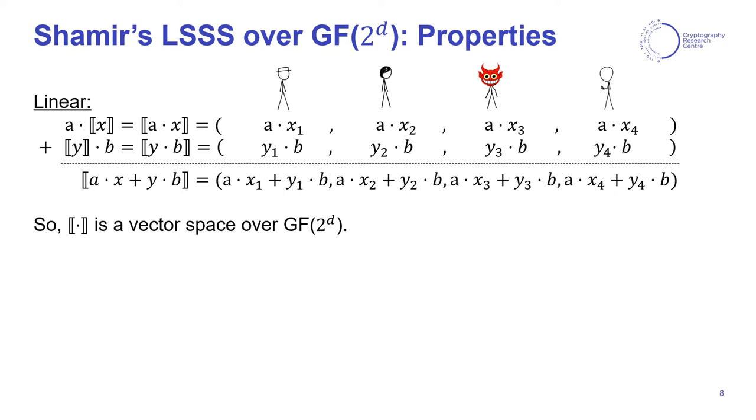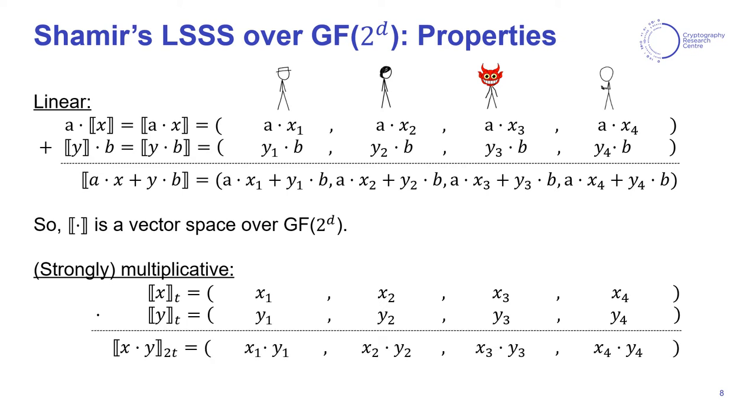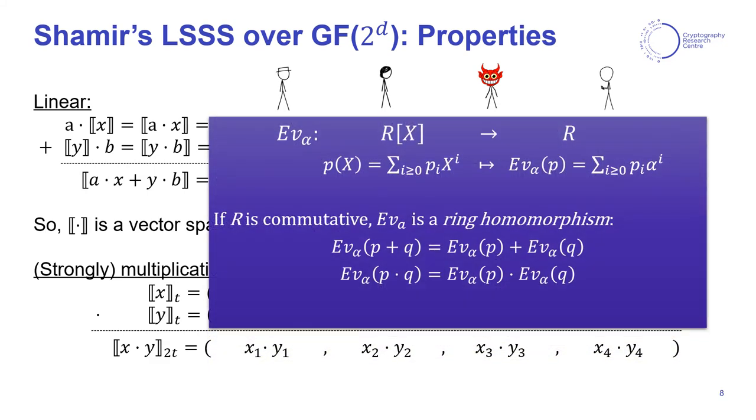So what's formally happening here is that the vector evaluations of a degree t polynomial is a vector space. Another interesting property is strong multiplicativity, meaning that given two degree t sharings of secrets x and y, a degree 2t sharing of x times y can be locally computed as a component-wise multiplication of the vector of shares. And crucially, both of these properties are enabled by the fact that the polynomial evaluation at some fixed point α is a ring homomorphism, meaning it doesn't matter whether you first evaluate two polynomials and then add them together or if you first sum the polynomials and evaluate afterwards. And the same property for the product of polynomials.